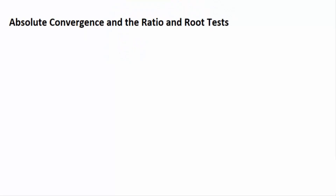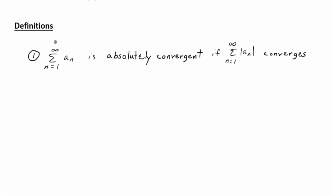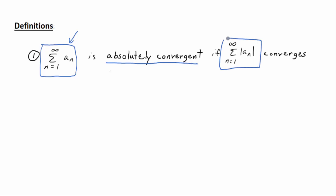Absolute convergence and the ratio and root tests — the goal is to determine whether or not a given series is absolutely convergent. The first definition: a series, written as the sum from n=1 to infinity of aₙ, is absolutely convergent if the series of the absolute values of aₙ converges. If that series converges, then we say the original series is absolutely convergent.